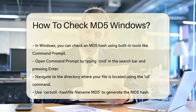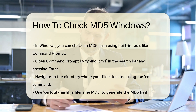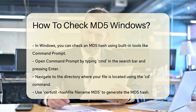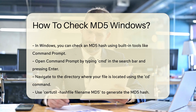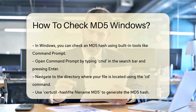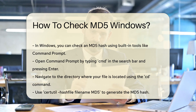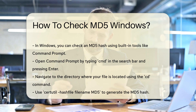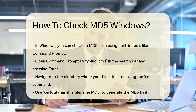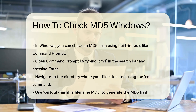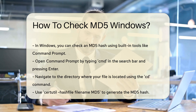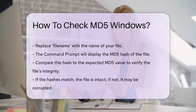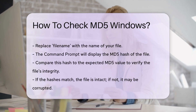Use the cd command to change directories. For example, type 'cd C:\path\to\your\file' and press Enter. After navigating to the correct directory, use the certutil command to generate the MD5 hash. Type 'certutil -hashfile filename MD5' and press Enter, replacing 'filename' with the name of your file.